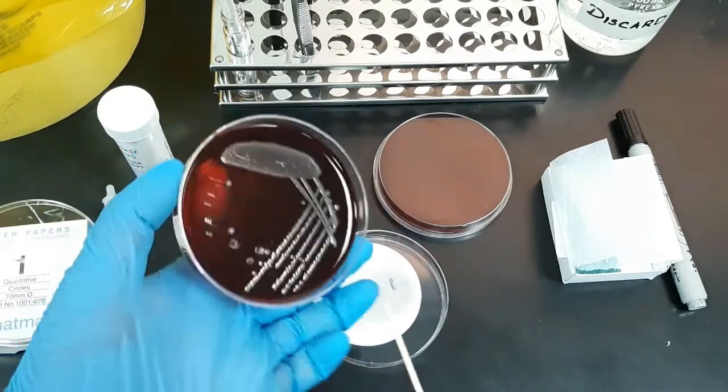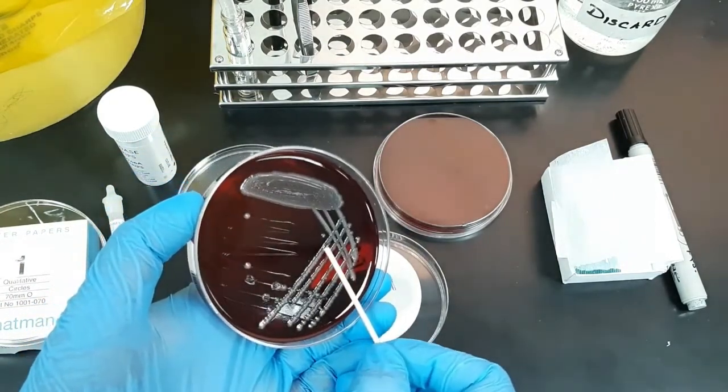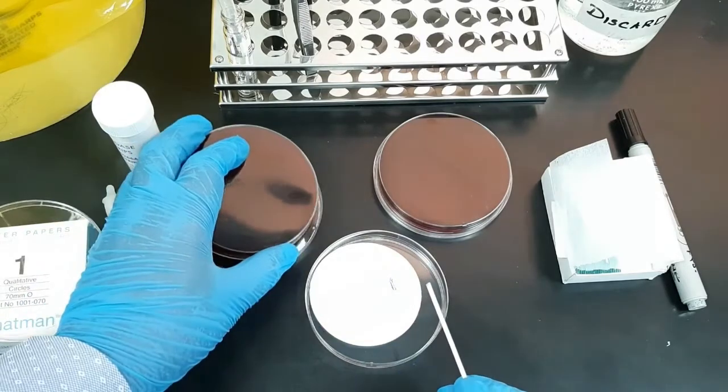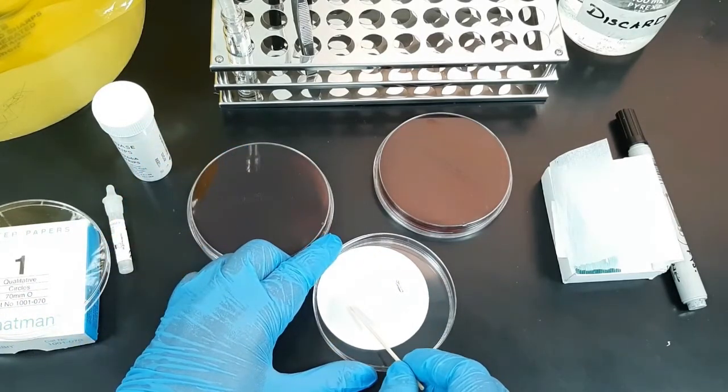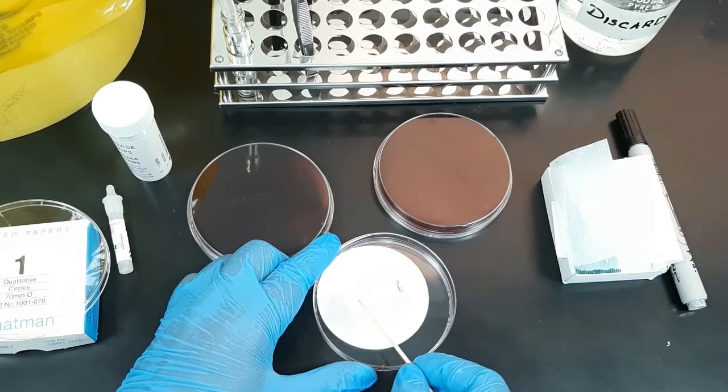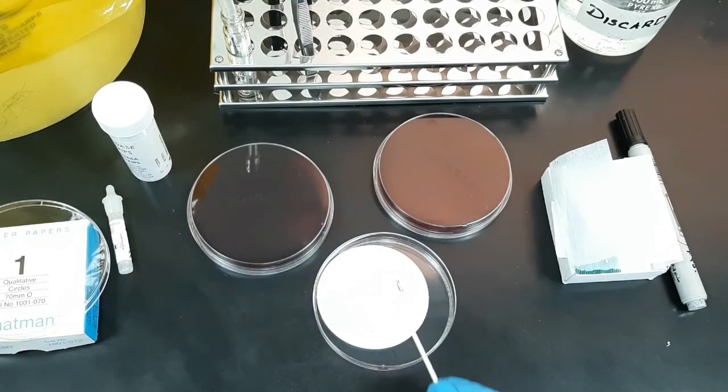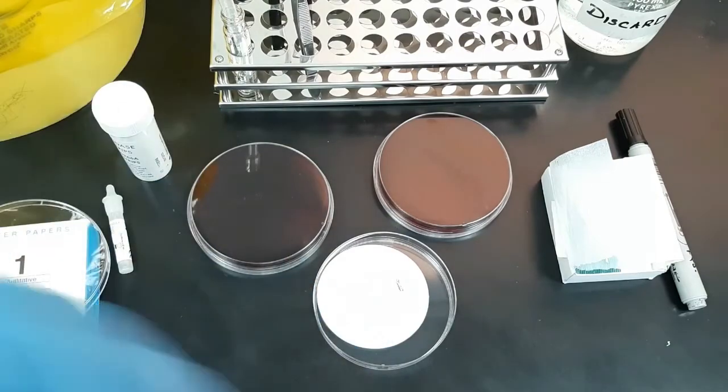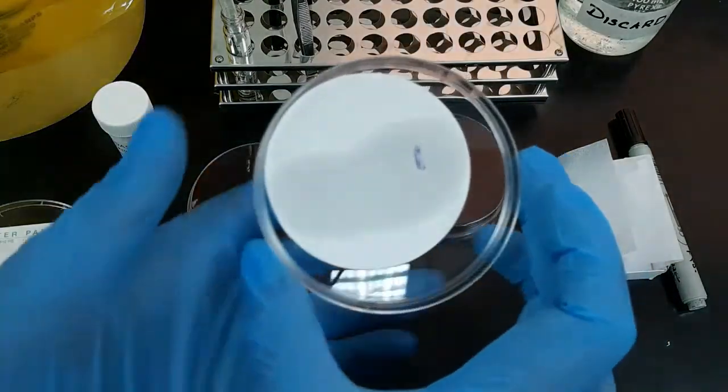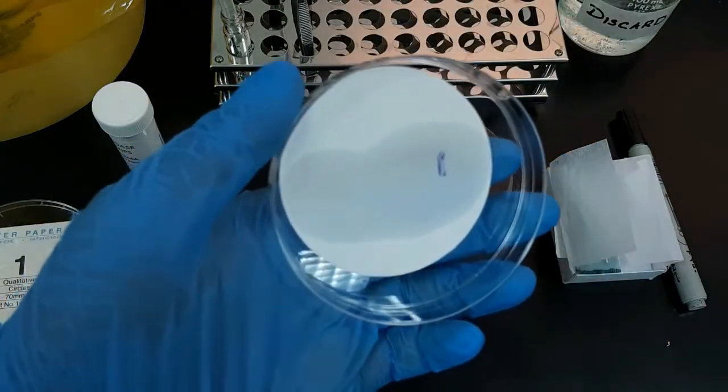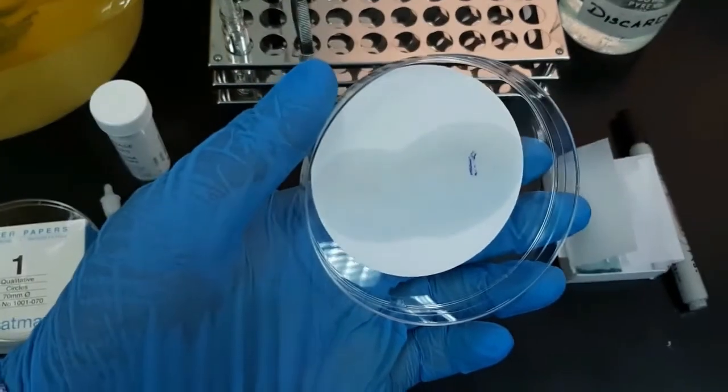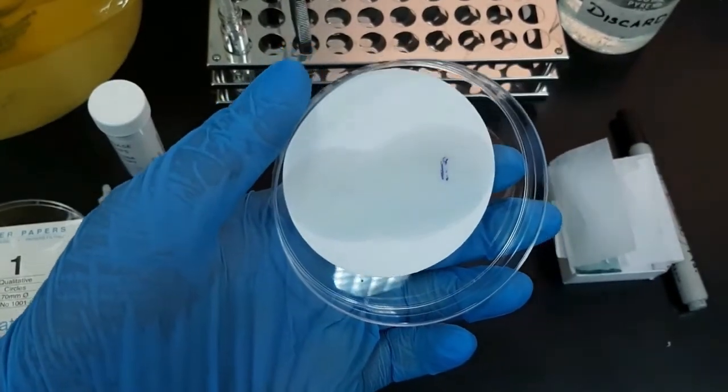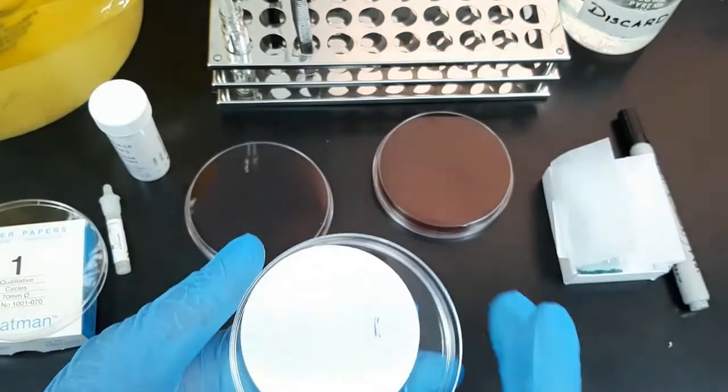Now we are going to repeat the test using an oxidase-negative control on another side of the filter paper. Using a wooden stick, pick the bacteria from the culture plate and rub the sample onto the oxidase reagent on the filter paper. You can notice that there is no formation of purple or blue color in the rubbed area. Now you can compare the positive and negative reactions.